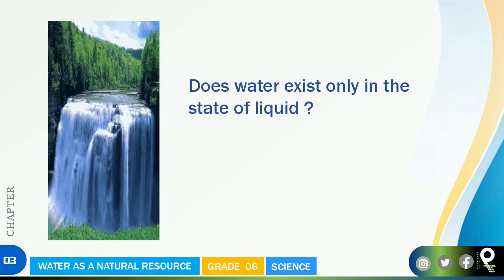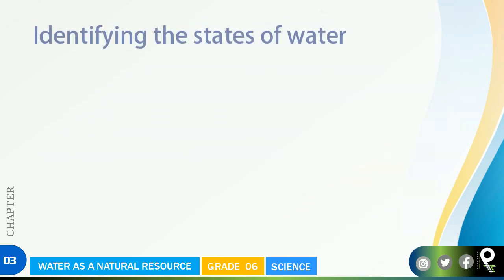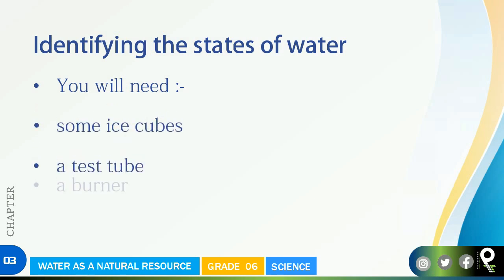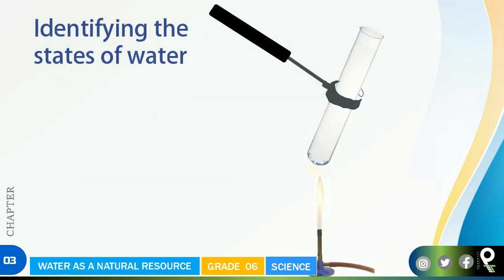Let's do the following activity to find out whether water is available in other states also. Identifying the states of water - you will need some ice cubes, a test tube, and a burner. Let's understand this experiment. You'll want to have a clock timer also.